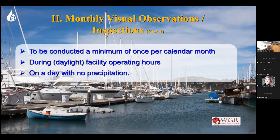Monthly inspections have to be done once a month during daylight business hours. If you're a 24/7 facility, you can't do a monthly inspection at 4 o'clock in the morning because it's dark — it needs to be done when the sun's up. And it has to be done on a day without rain or precipitation. For some higher elevations, that means without snow.